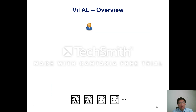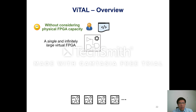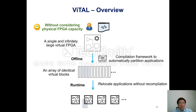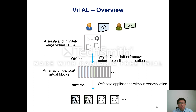We virtualize the FPGA cluster into a single large virtual FPGA so users can develop applications without considering the capacity of individual physical FPGAs. A compilation framework is developed to partition the user's application into virtual blocks, and the number of virtual blocks is automatically determined based on resource usage. At runtime, these virtual blocks are deployed onto physical FPGAs. One unique feature of VITAL is that virtual blocks can be relocated to different spatial locations without recompilation, enabling reuse of compilation results for different runtime resource allocations and lowering compilation cost. This relocation capability also enables FPGA sharing to improve resource utilization.